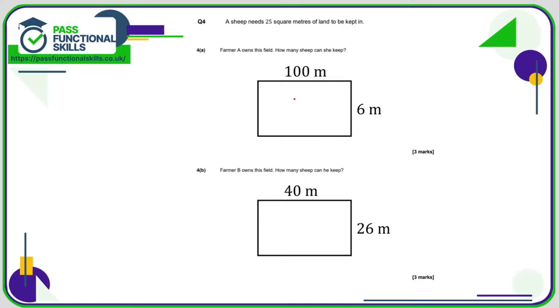Question 4, this is a calculator question. So we've been told that a sheep needs 25 metres squared. So in total here, there are 600 square metres. So how many 25s go into 600? Well, 600 divided by 25, that works out as 24 sheep.